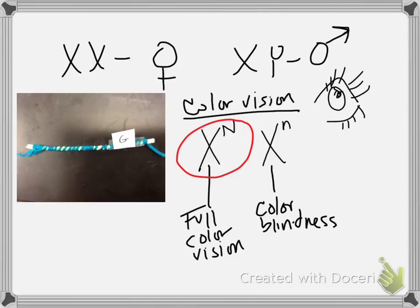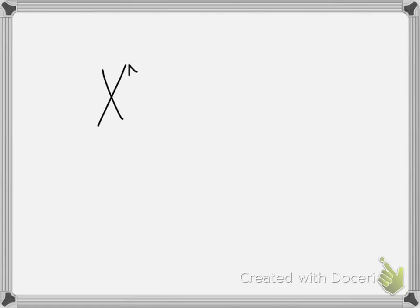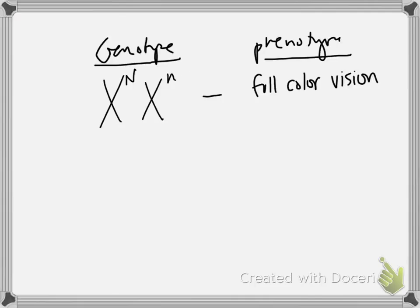Because colorblindness, the allele for colorblindness is recessive. As long as you have one copy of this, you have full color vision. So if we have a female who is X big N, X little n, that's her genotype. We wouldn't ever know that she has that recessive. So we say full color vision, but she is what's called a carrier. We only know as a geneticist or a biologist that she's a carrier when we take a family history.